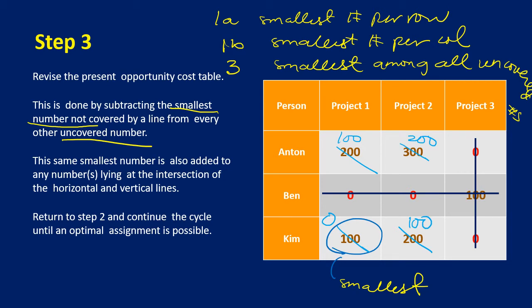This same number (100) is also added to any number lying at the intersection of the horizontal and vertical lines. Here, that intersection value is 100, so adding 100 makes it 200. After these revisions, we return to Step 2 and continue the cycle until an optimal assignment is possible.